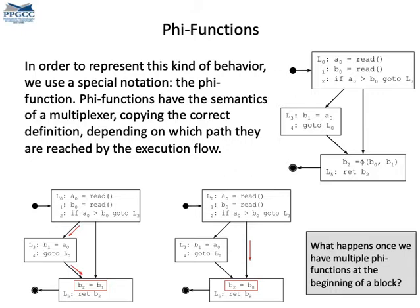Phi functions work like multiplexers. They copy a variable into another depending on the program flow. So if the flow arrives at l5 coming from l4, then a phi function is like a copy of b1 into b2. Otherwise, if the flow arrives at l5 from l2, then the phi function works as a copy of b0 into b2.